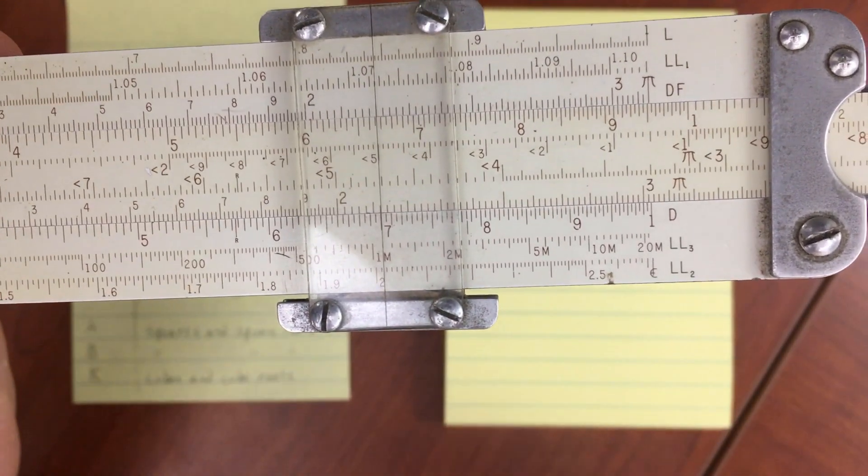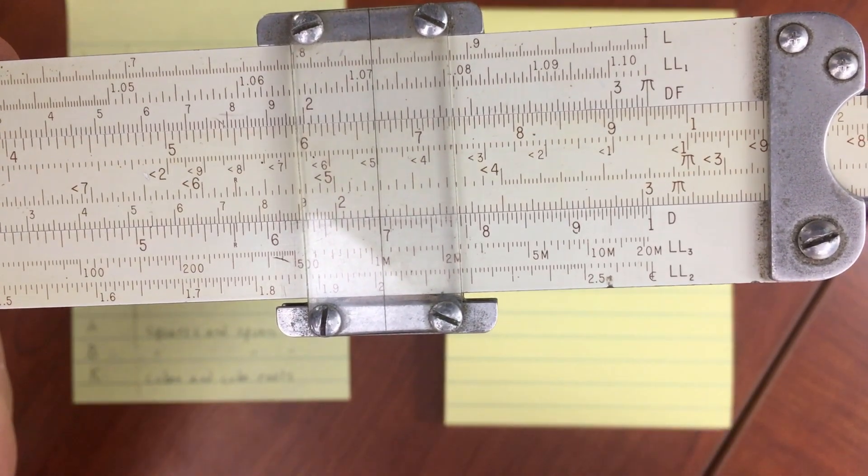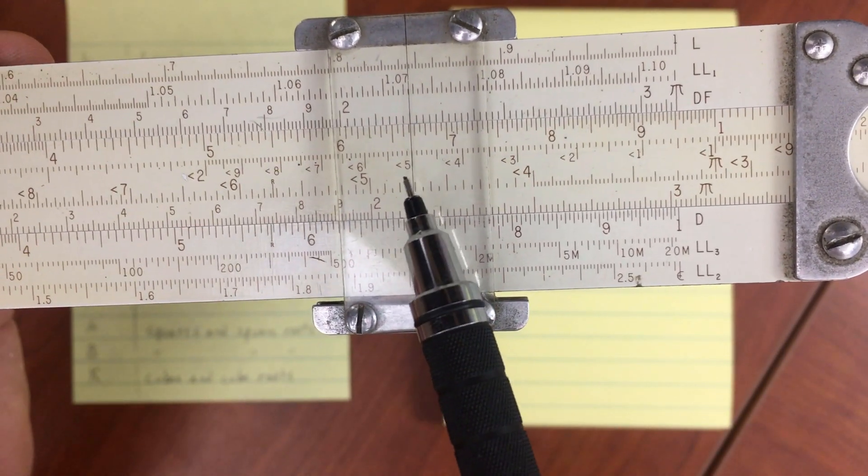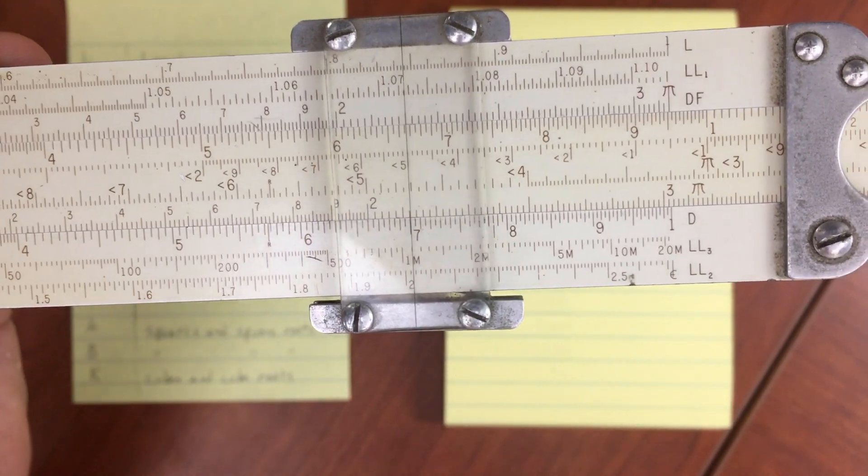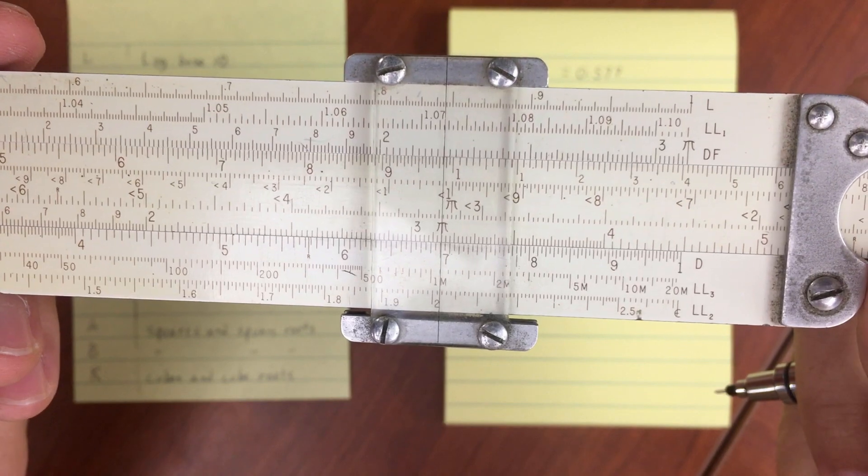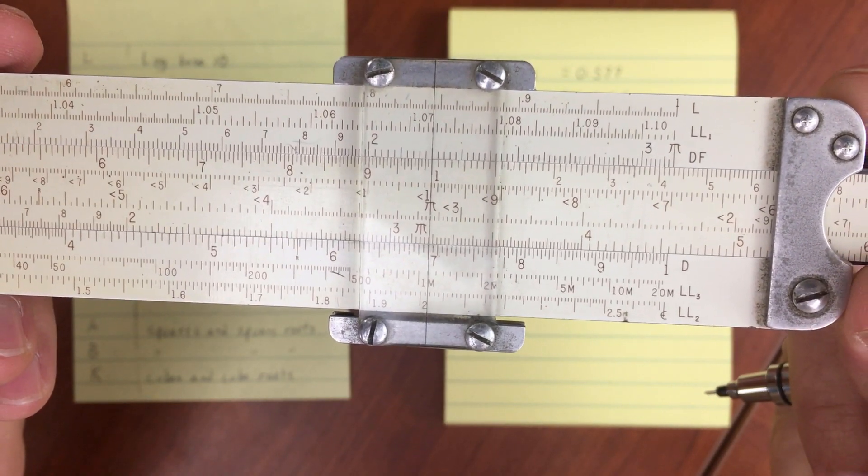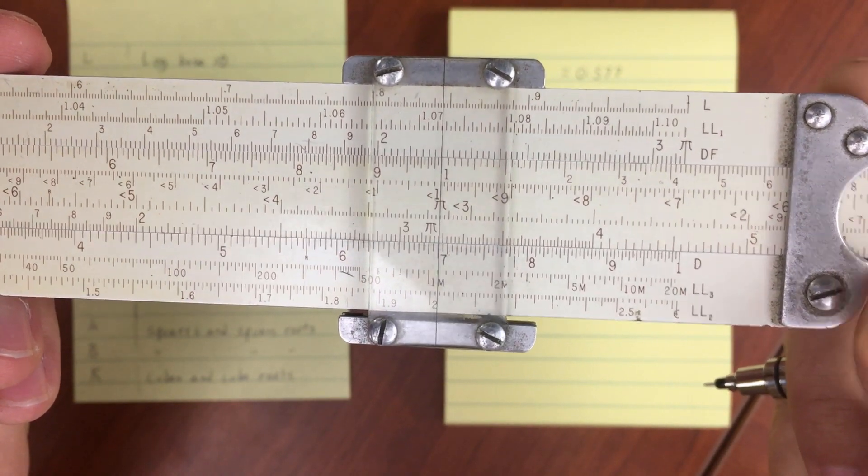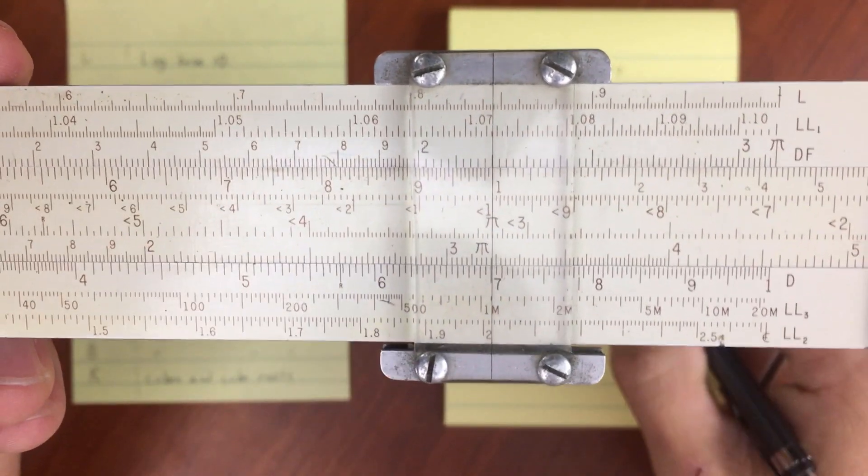Alright, now I've got my hairline set, so I can move over to the next calculation. I'm still going to be using the folded scale, though. So I need to move over to the 1 here on the folded scale. And then our last number is 12.5.